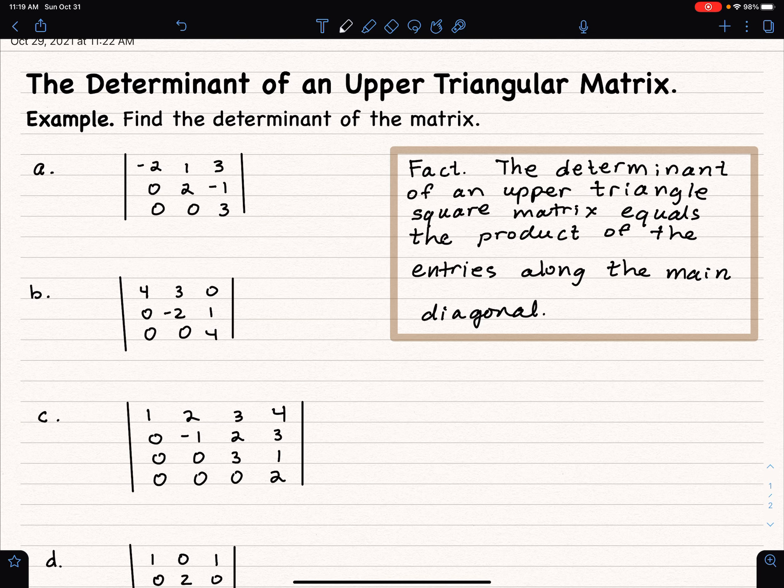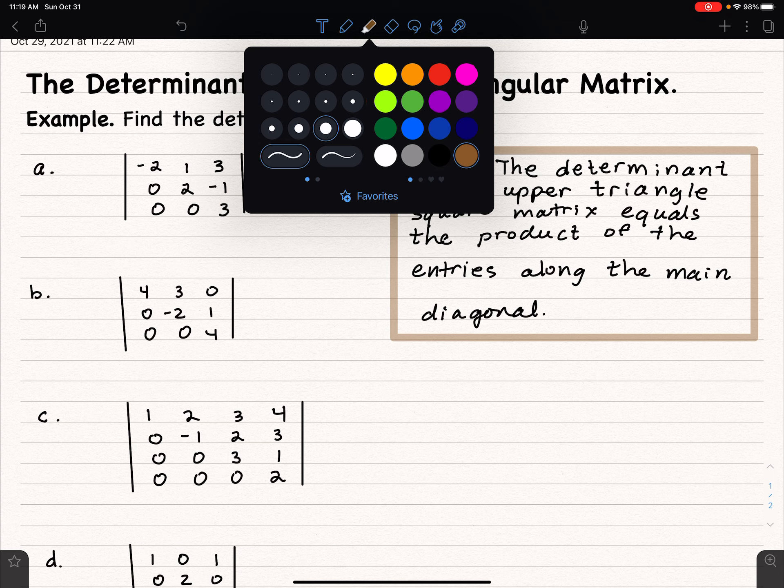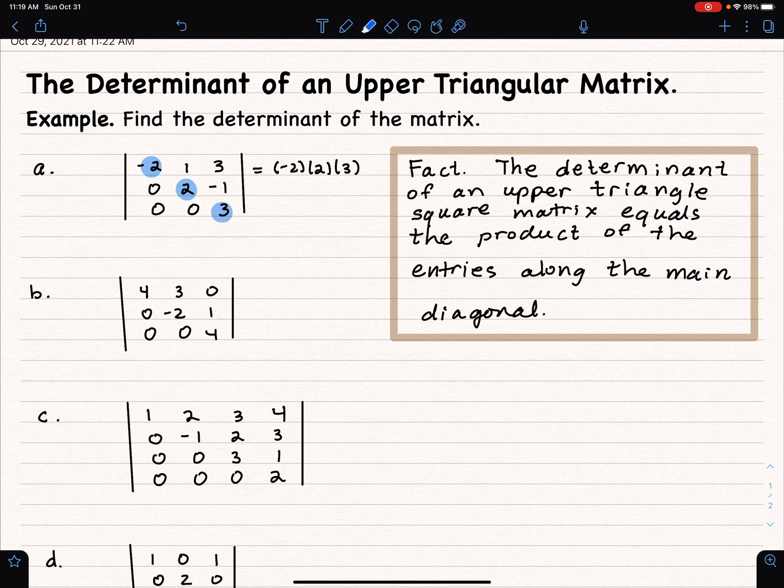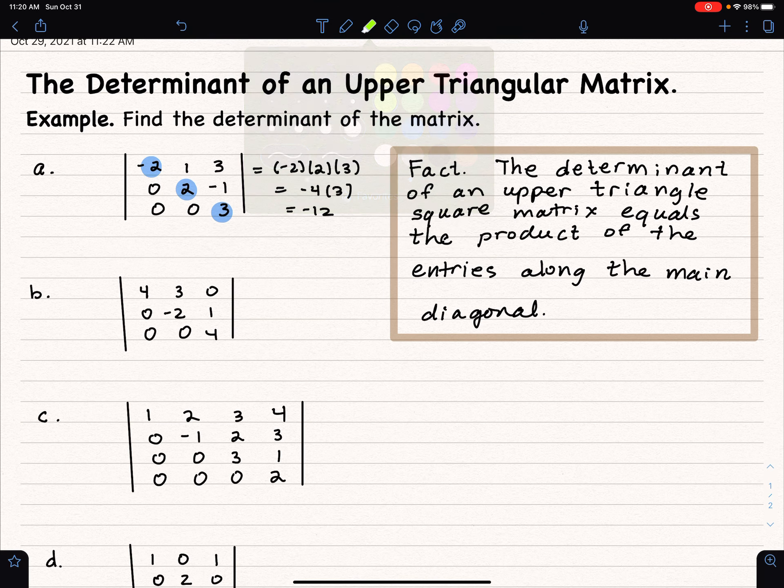I'll just go ahead and evaluate the determinant, which is a number, by multiplying those entries along the main diagonal. So, those guys there, and then it's up to me to make a mistake. Let's see, negative 2 times 2 is negative 4. Multiply by 3, and that's negative 12. Hopefully that's correct. It's just the question of whether I'm multiplying correctly.